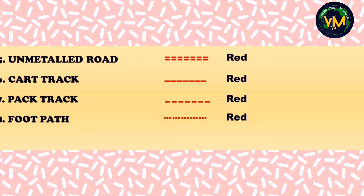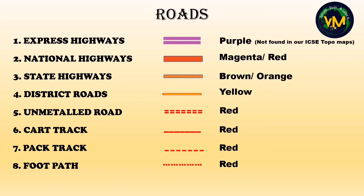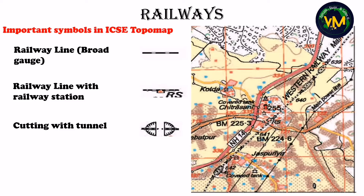Here is a gist of all the symbols we have learned. Next, coming to railways. These are the three important symbols present in our ICSE topographical maps when it comes to railways.